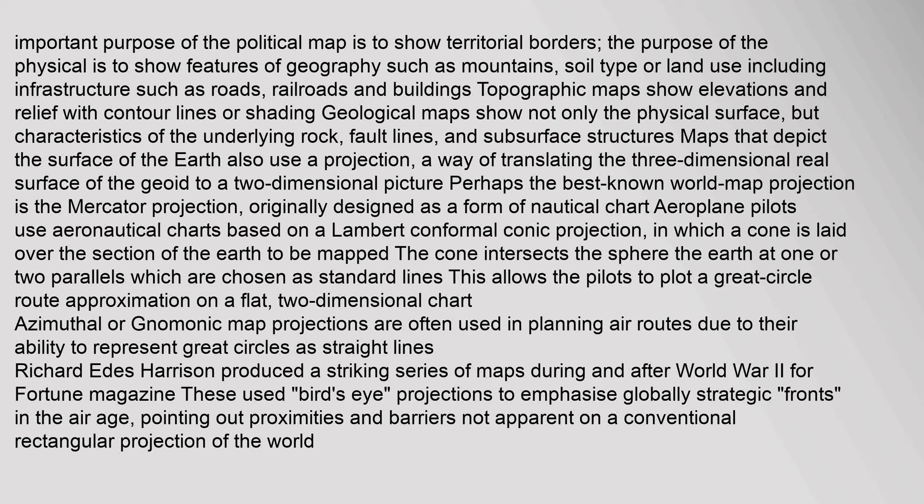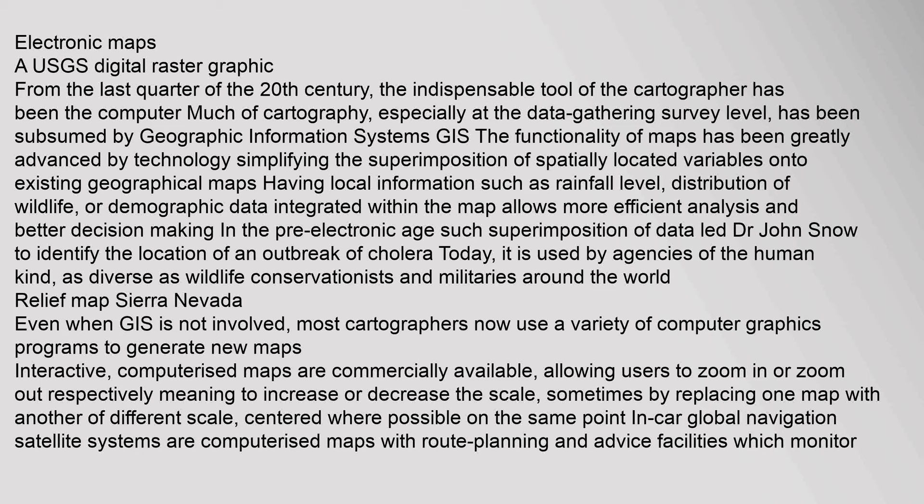From the last quarter of the 20th century, the indispensable tool of the cartographer has been the computer. Much of cartography, especially at the data gathering survey level, has been subsumed by geographic information systems (GIS). The functionality of maps has been greatly advanced by technology, simplifying the superimposition of spatially located variables onto existing geographical maps. Having local information such as rainfall level, distribution of wildlife, or demographic data integrated within the map allows more efficient analysis and better decision making. Such superimposition of data led Dr. John Snow to identify the location of an outbreak of cholera.